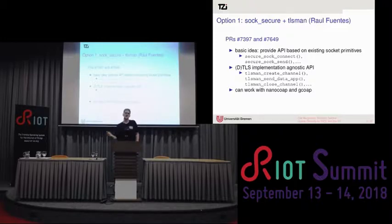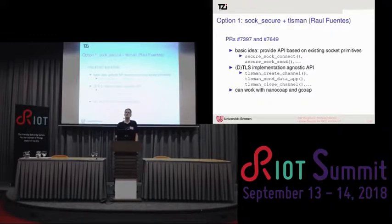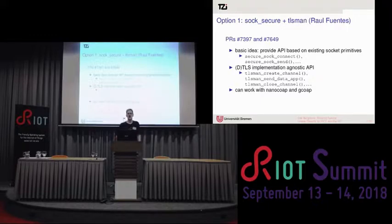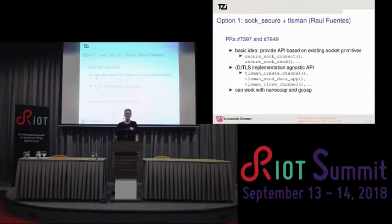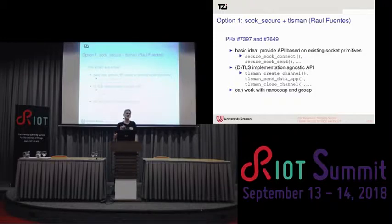To make this agnostic of the TLS implementation being used underneath, he developed another module called TLSMain that abstracts from the primitives of the underlying TLS implementation. This provides a generic set of primitives describing what the TLS implementation has to do, such as create a secure association, send data over the opened channel, and shut down the connection. The proof of concept currently uses the nanocoap server to show you can send a request and get a response, then the channel is shut down. Work is also ongoing for gcoap, though integration is a bit more difficult due to gcoap's different event loop.